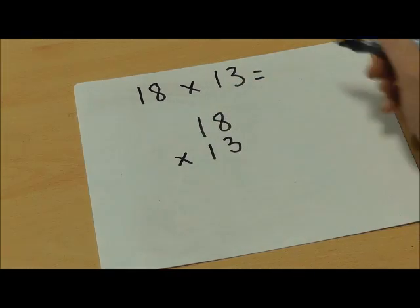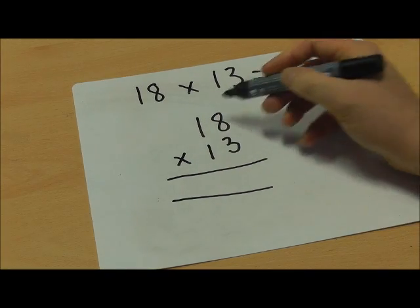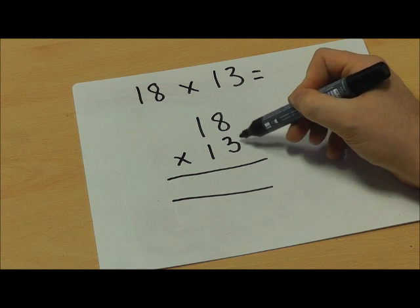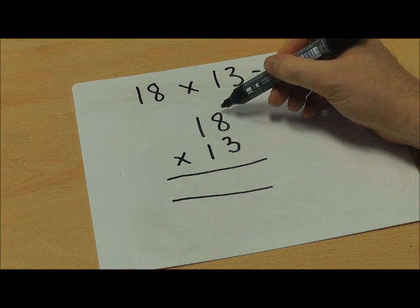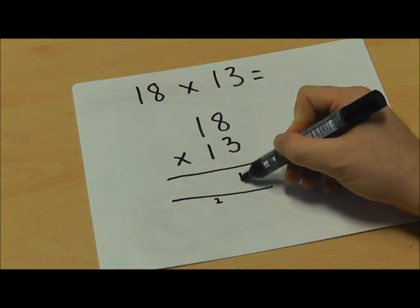So I'm going to multiply 18 by 13. To begin with I'm going to multiply all of the top numbers by the bottom unit, so by this 3. So I'm going to start by doing 8 times 3 which equals 24.